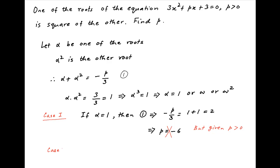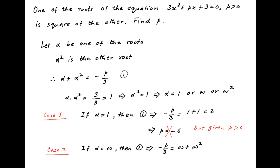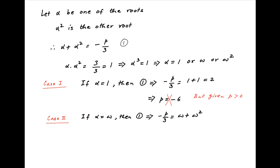In the second case, alpha is equal to omega, and therefore the sum equation becomes minus p upon 3 is equal to omega plus omega square. We know that 1 plus omega plus omega square is equal to 0, and therefore omega plus omega square is equal to minus 1. Substituting this, we get minus p upon 3 is equal to minus 1, and therefore p is equal to 3.